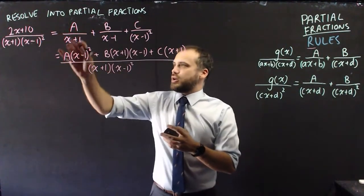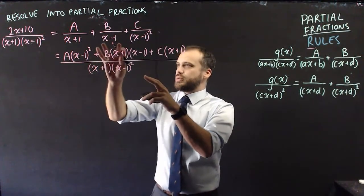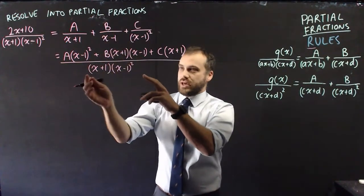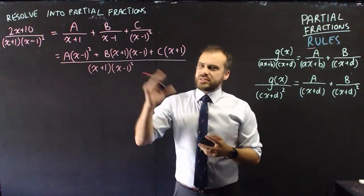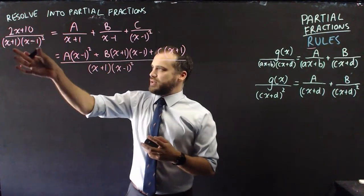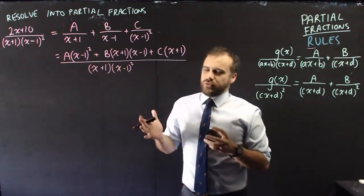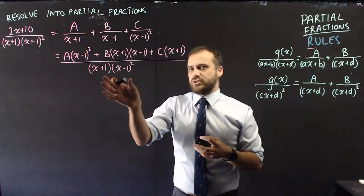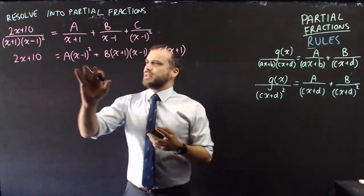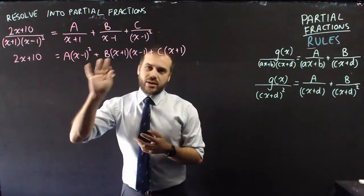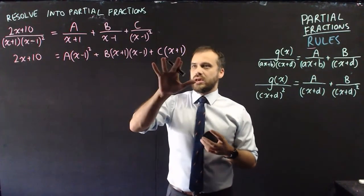To combine the fractions: a over (x + 1) needs to be multiplied top and bottom by (x − 1)²; b needs to be multiplied by (x + 1) and one more (x − 1); and c just needs to be multiplied top and bottom by (x + 1). With partial fractions we often skip showing the denominator and jump straight to equating numerators. Letting x = 1 makes the a and b terms disappear, leaving just c.